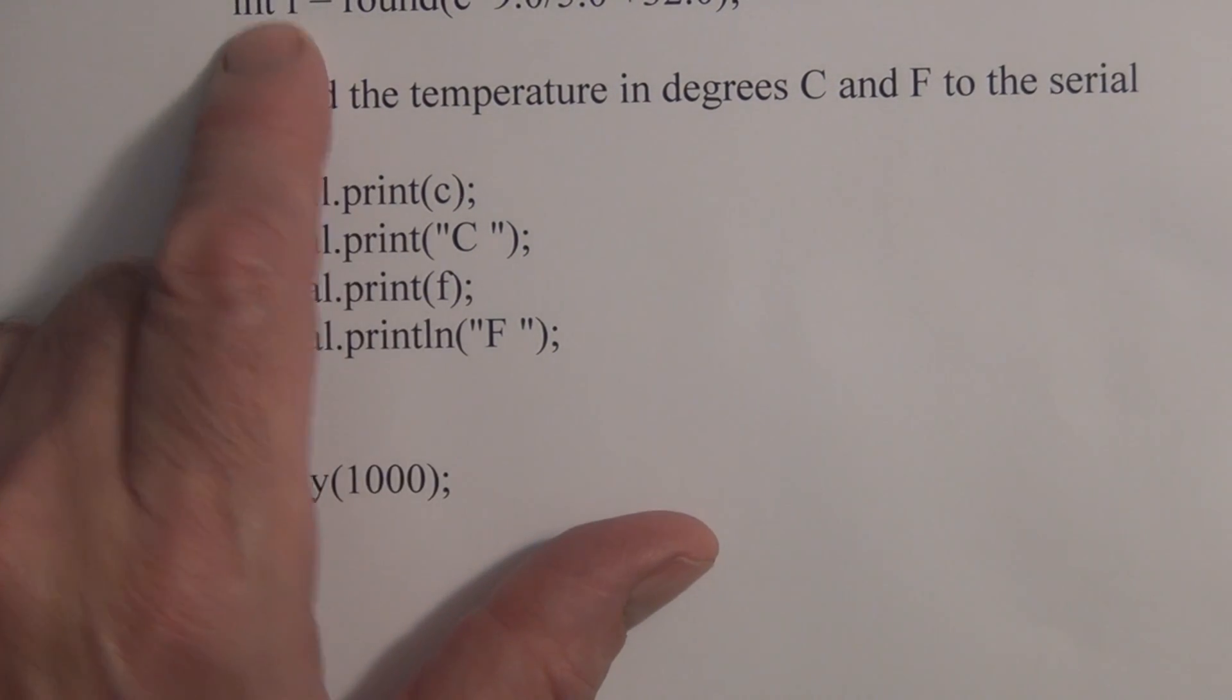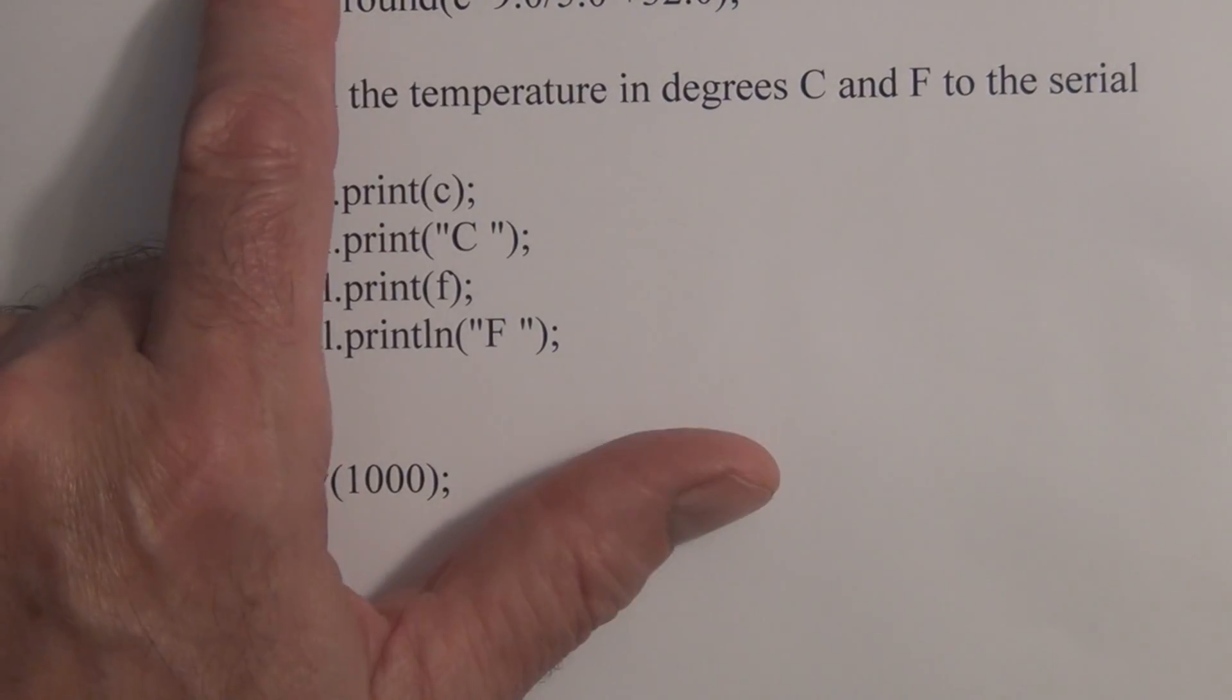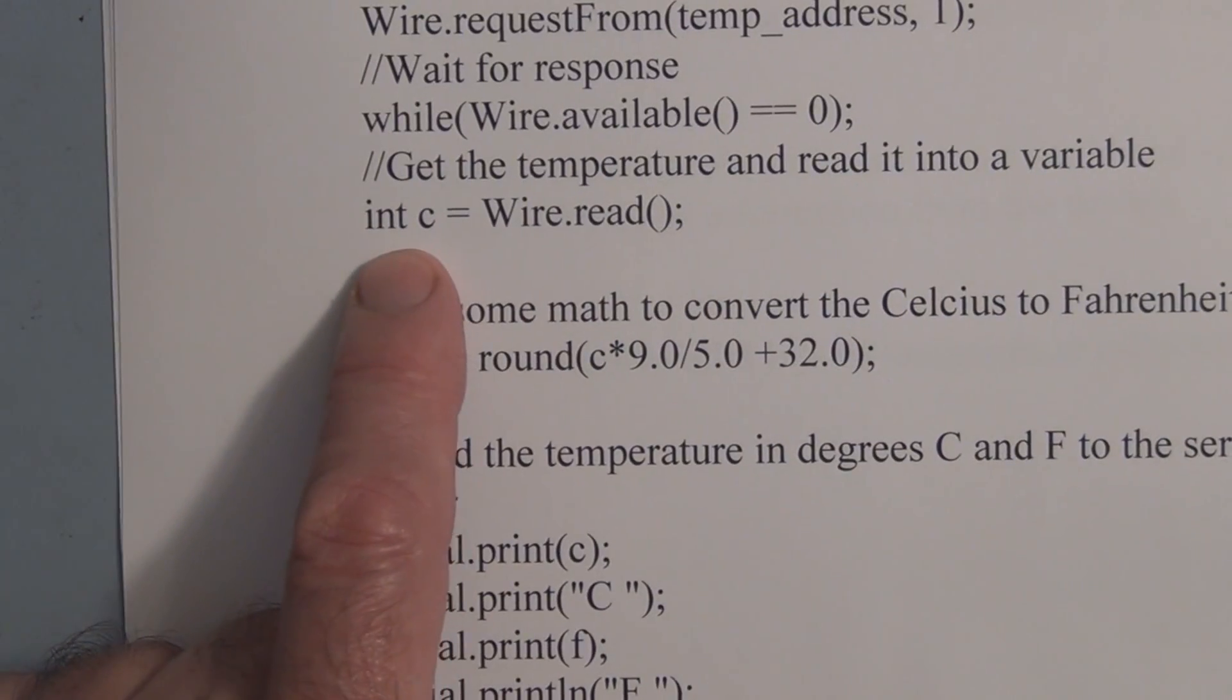So if we didn't want the Fahrenheit measurement, we already have the Celsius because the digital output is a direct measurement of Celsius on the digital temperature sensor. There's no converting or interpretation needed.